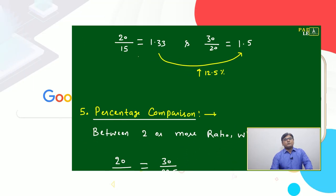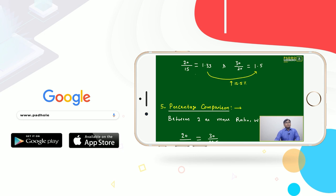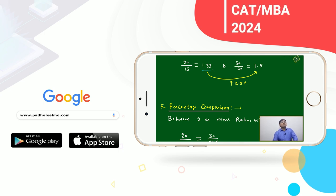We can verify in fraction form: 20 by 15 is approximately 1.33, and 30 by 20 is 1.5. From 1.33 to 1.5 is an increase of approximately 12.5 percent, which confirms our result.